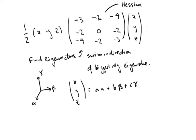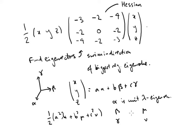Then this whole expression diagonalizes, and we just get that this term is half (alpha squared times lambda plus beta squared times mu plus gamma squared times nu), where alpha is a unit lambda eigenvector, beta is a unit mu eigenvector, and gamma is a unit nu eigenvector.